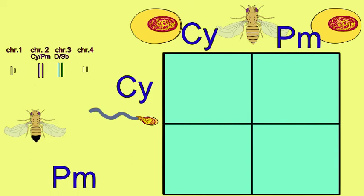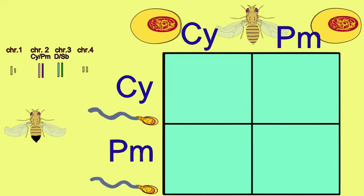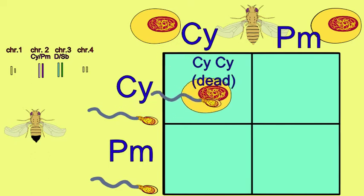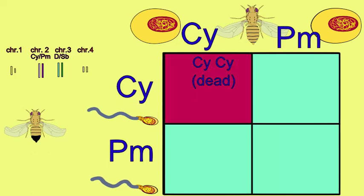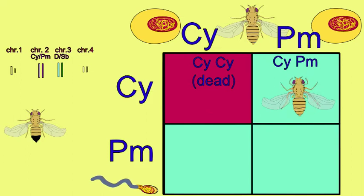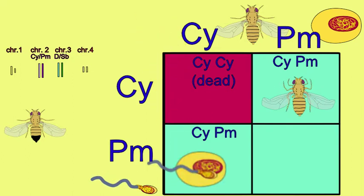one gamete will have curly and the other will have plum. If an embryo results from a curly-bearing sperm fusing with a curly-bearing ova, this embryo dies because curly is homozygous lethal.